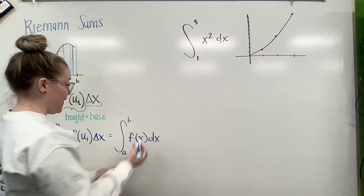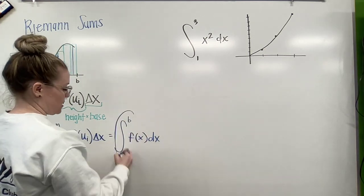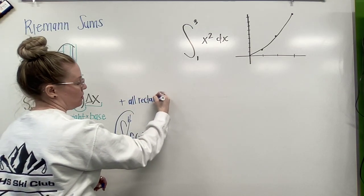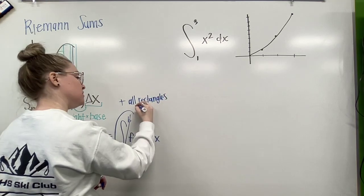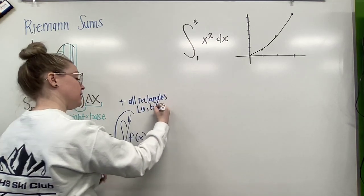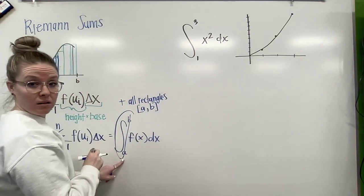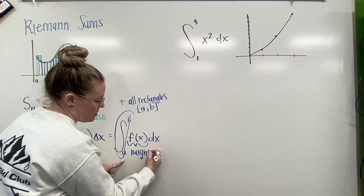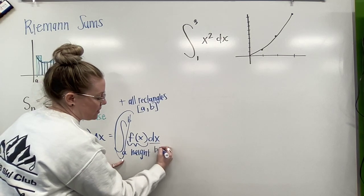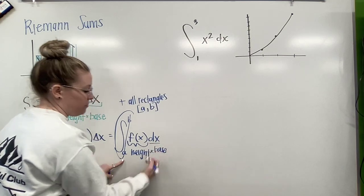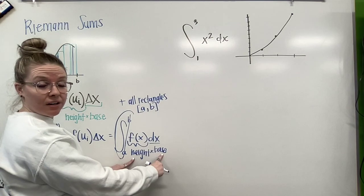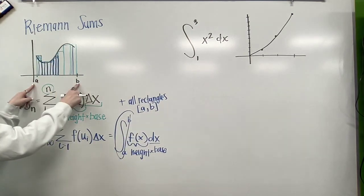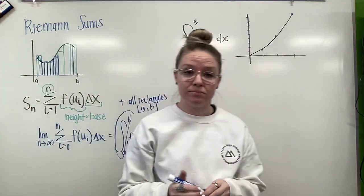So what this is saying, we're going to add all the rectangles on the interval from a to b. This is still giving us our height of our rectangle, and this is still giving us our base. Height times base, there's the area of our rectangles. We're going to add them up from a to b. That's all it is.